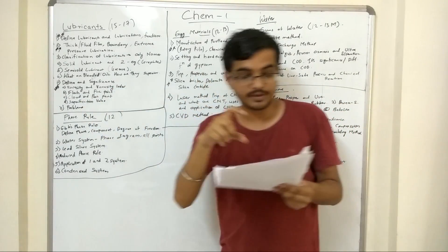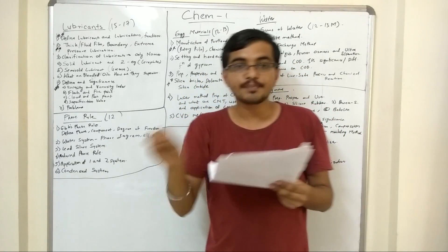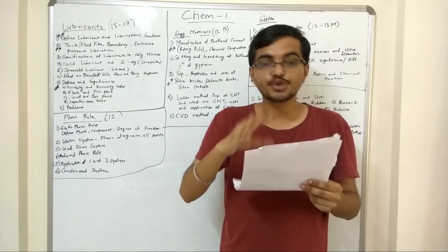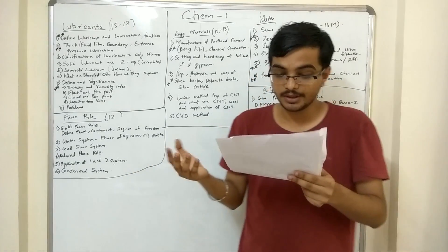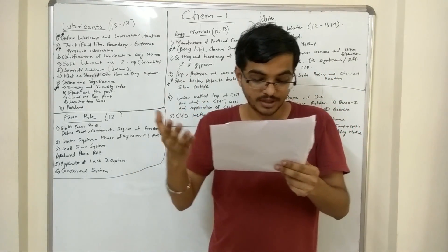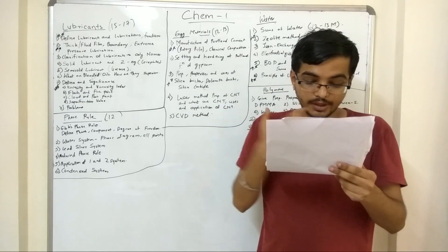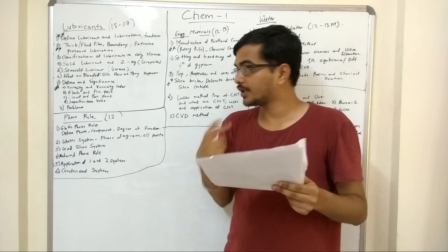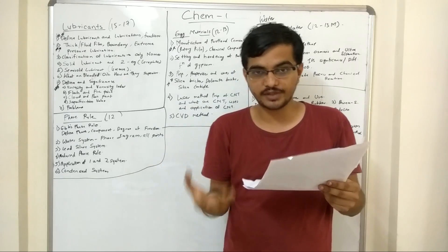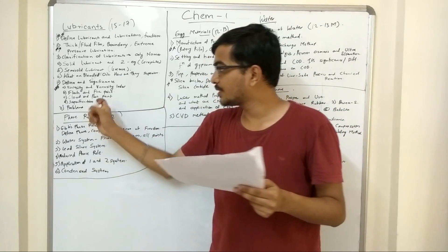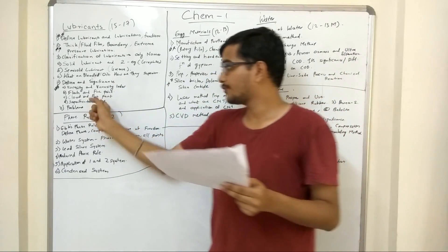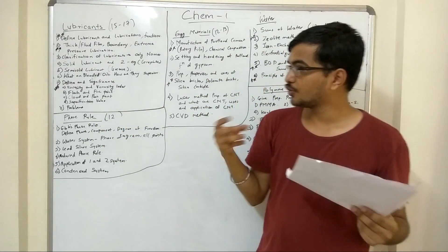Another important question from this chapter is sums. Very simple sums from this chapter are asked - one sum will surely appear in the paper. The sums are normally on saponification value. Check out your textbook, whichever you are learning, and see the problems, which can fetch you around 4-6 marks.